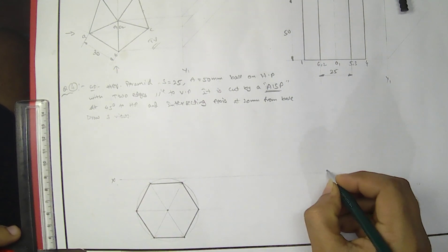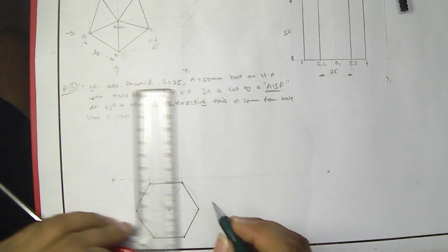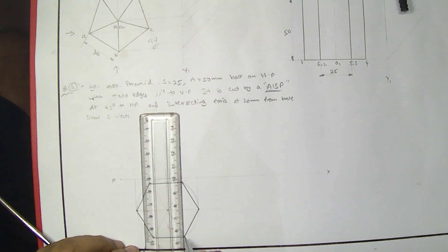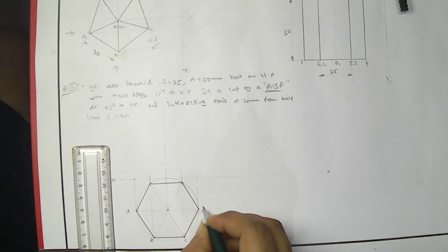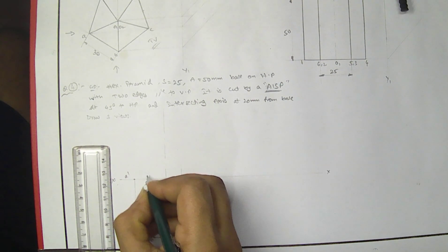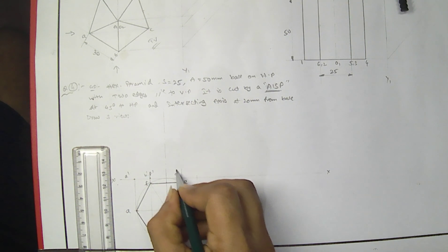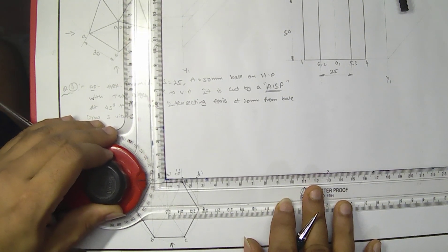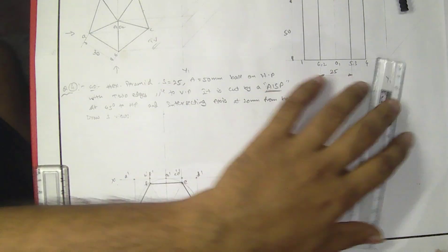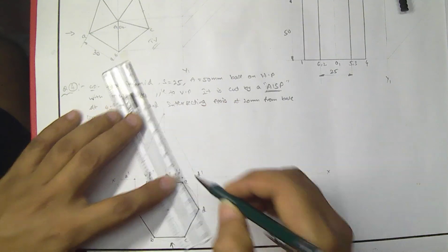I'll project this — C, D, E, F, A dash. Looking in this direction, I can see first B, then F, then C and E, then D. This is O2 dash. The height of the pyramid is 50. Here also I'll draw light because I don't know which will be the removed part and which will be the remaining part.